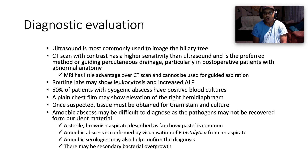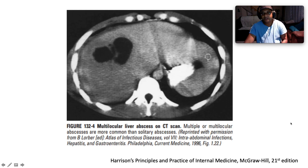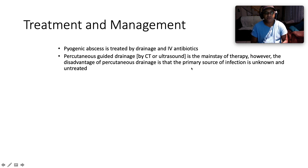Amoebic abscess may be difficult to diagnose as the pathogen may not be recovered from the aspirated material. However, a key clue is that aspiration of the fluid under ultrasound or CT guidance yields a sterile brownish aspirate typically described as anchovy paste. Amoebic abscess is confirmed by visualization of Entamoeba histolytica from an aspirate. Amoebic serologies such as gel diffusion or ELISA for Entamoeba histolytica may also confirm the diagnosis. There may be secondary bacterial overgrowth. The CT from today's clinical case shows a multi-locular liver abscess.